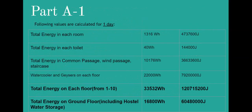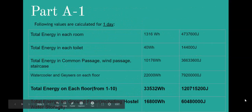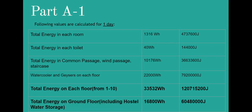First, we look at the calculation. Total energy in each room is around 1,316 watt-hours. Total energy in each toilet is 40 watt-hours. Similarly for passage and water coolers, we ultimately calculate the total energy for each room, and then the total energy for the ground floor.